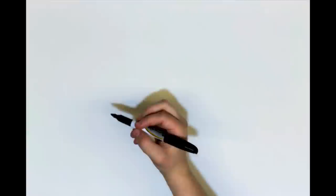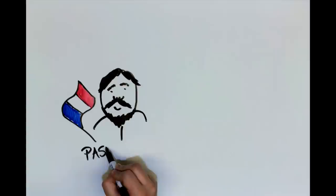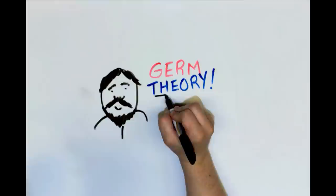A French scientist named Louis Pasteur changed the way we understand the world using science. He proved that spontaneous generation was not true.